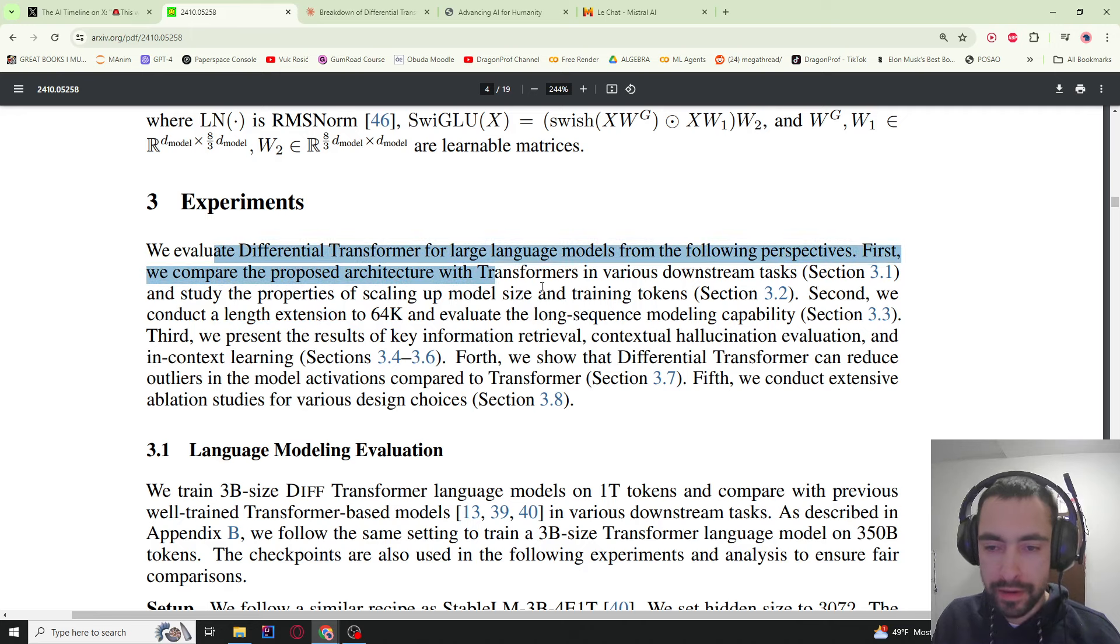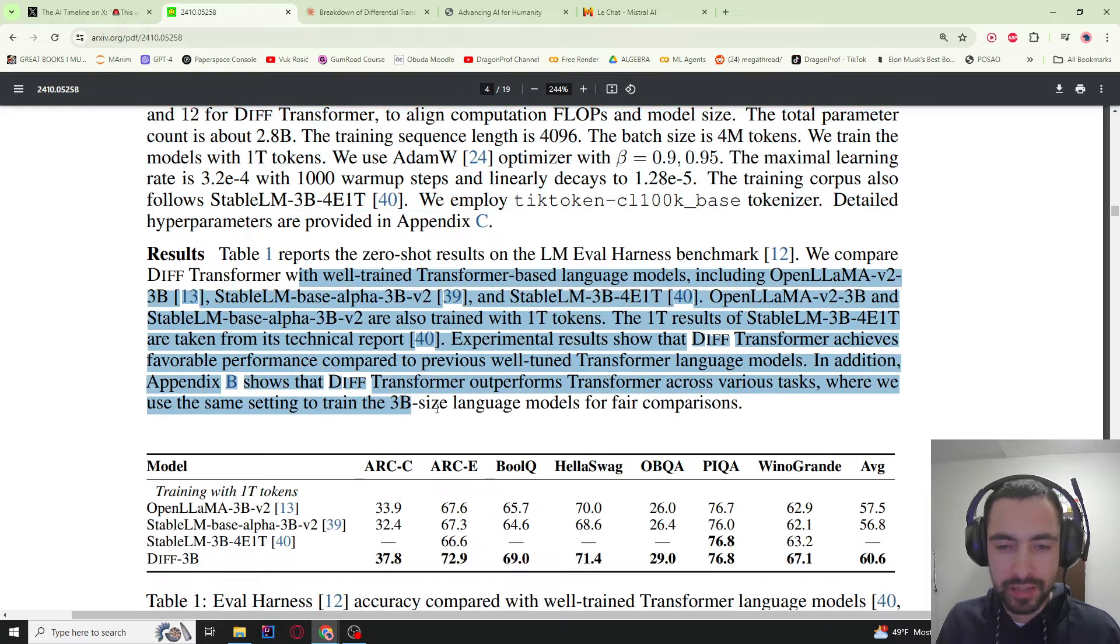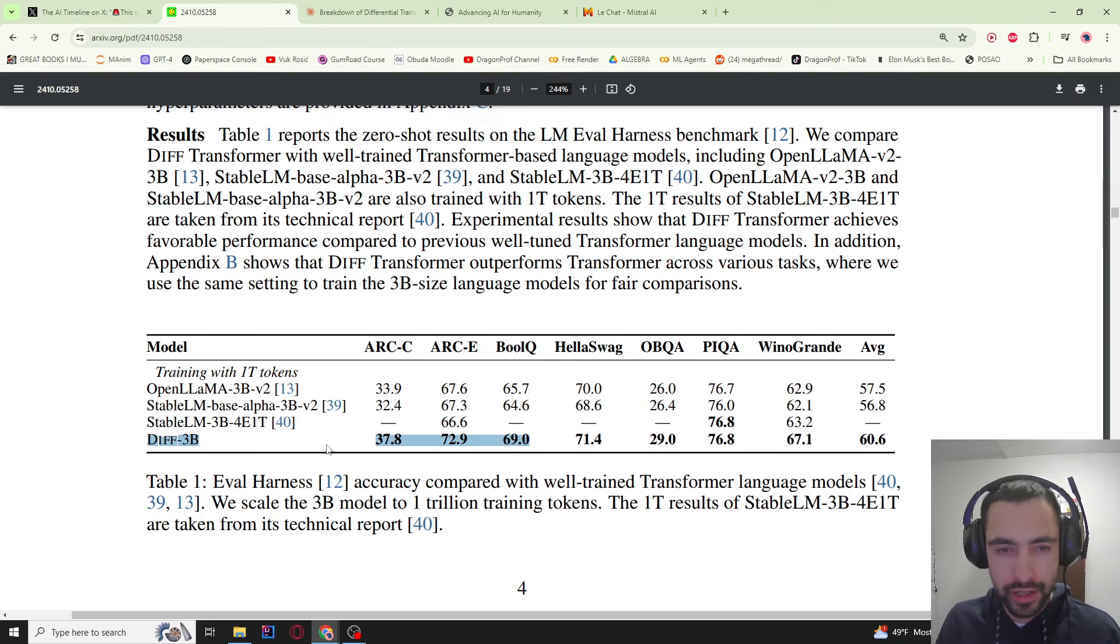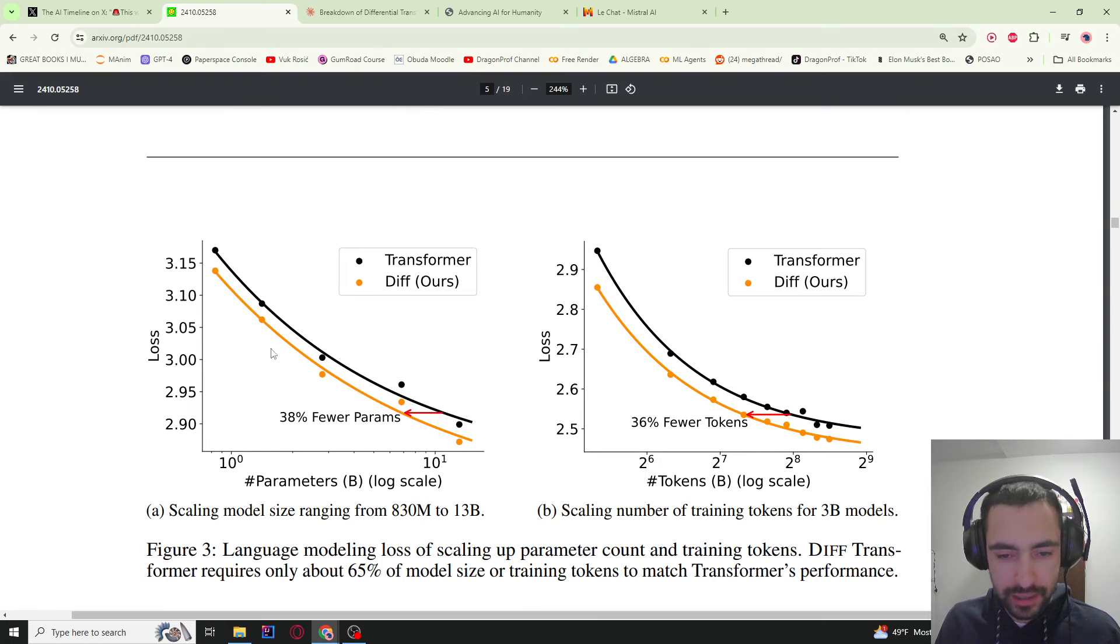In their experiments, they first compare it to a normal transformer, then they extend the length to 64k tokens. Then they test it in key information retrieval, contextual hallucination evaluation, and in-context learning. Then they see how differential transformer can reduce outliers which helps with quantization, and they also do extensive tests for the design choices. They explain in more detail how exactly they are doing these experiments. We see that here, differential transformers are winning in comparison to these other transformers. We can see down that it also learns faster. We have number of parameters from 830 million to 13 billion, and the loss is getting reduced faster. So you need 38% fewer parameters and you need 36% fewer training tokens.